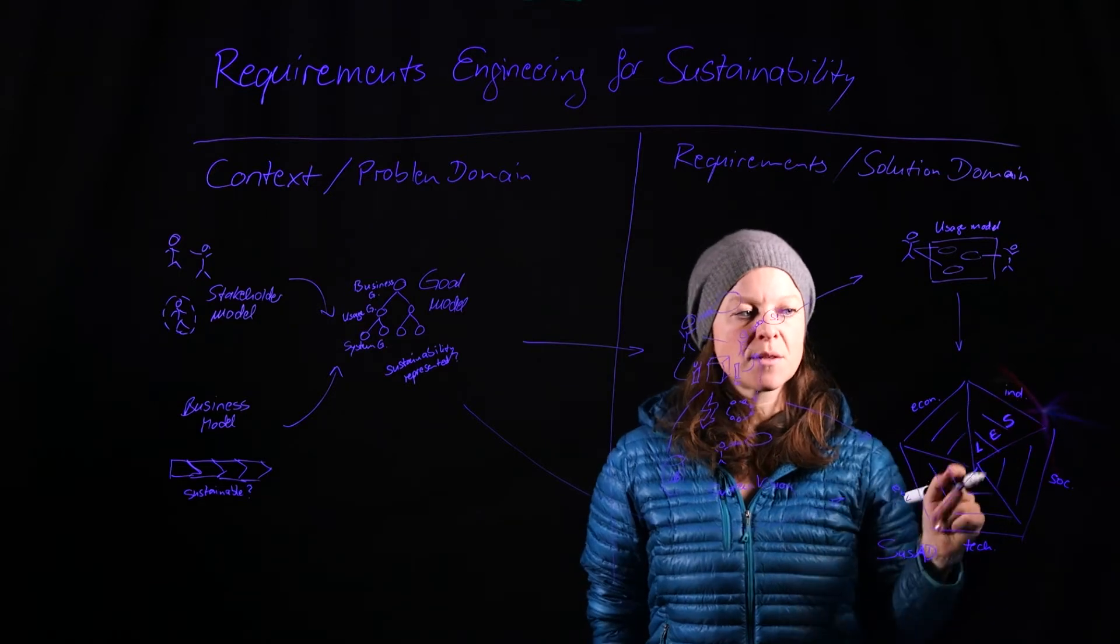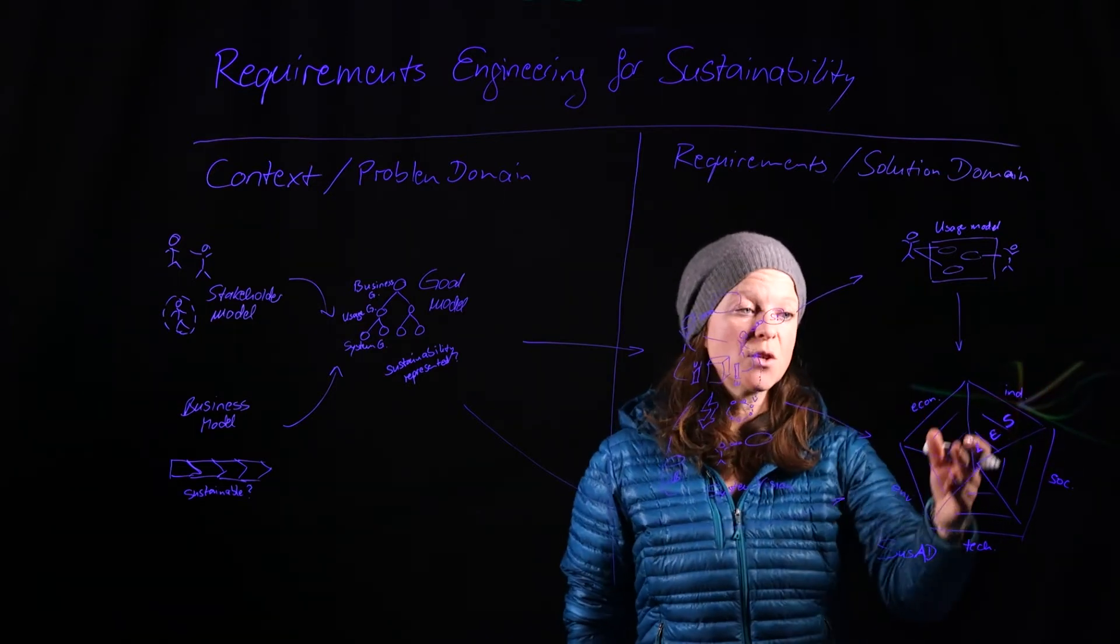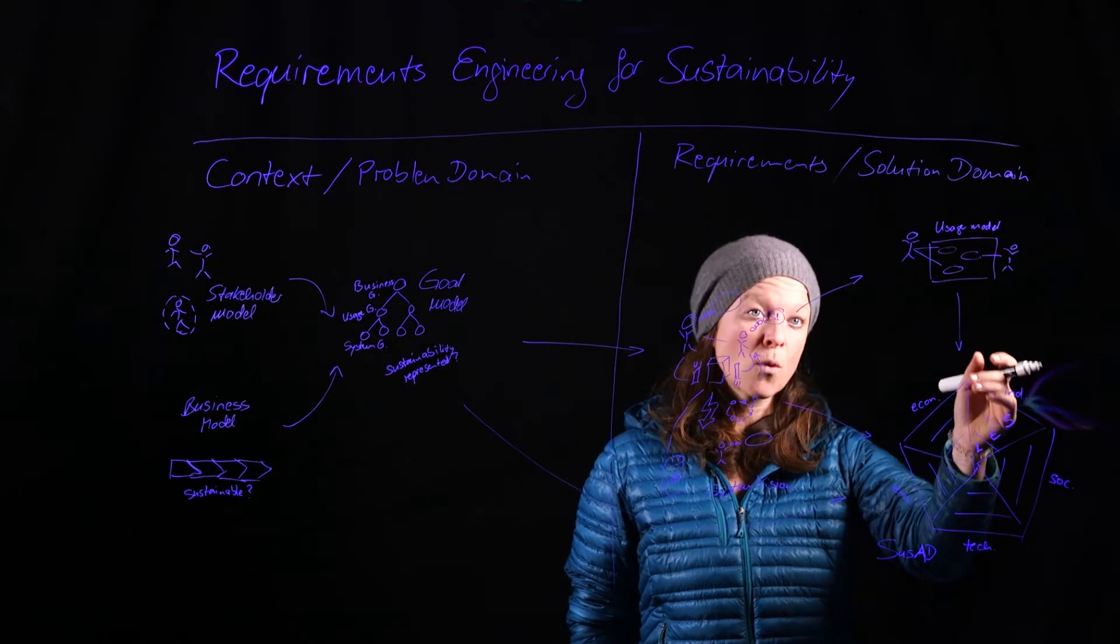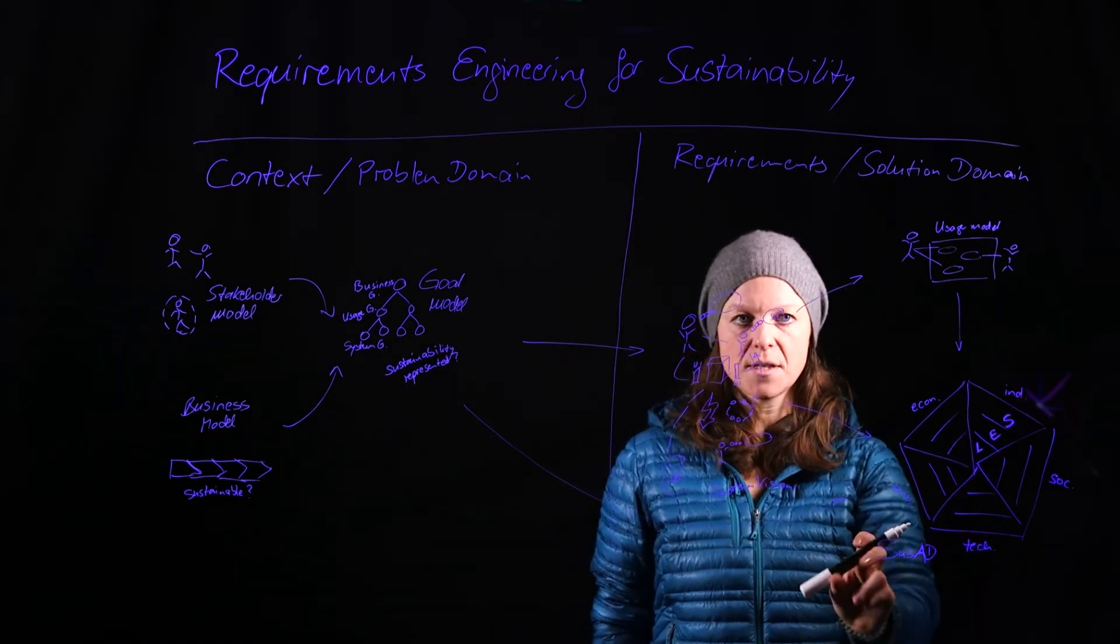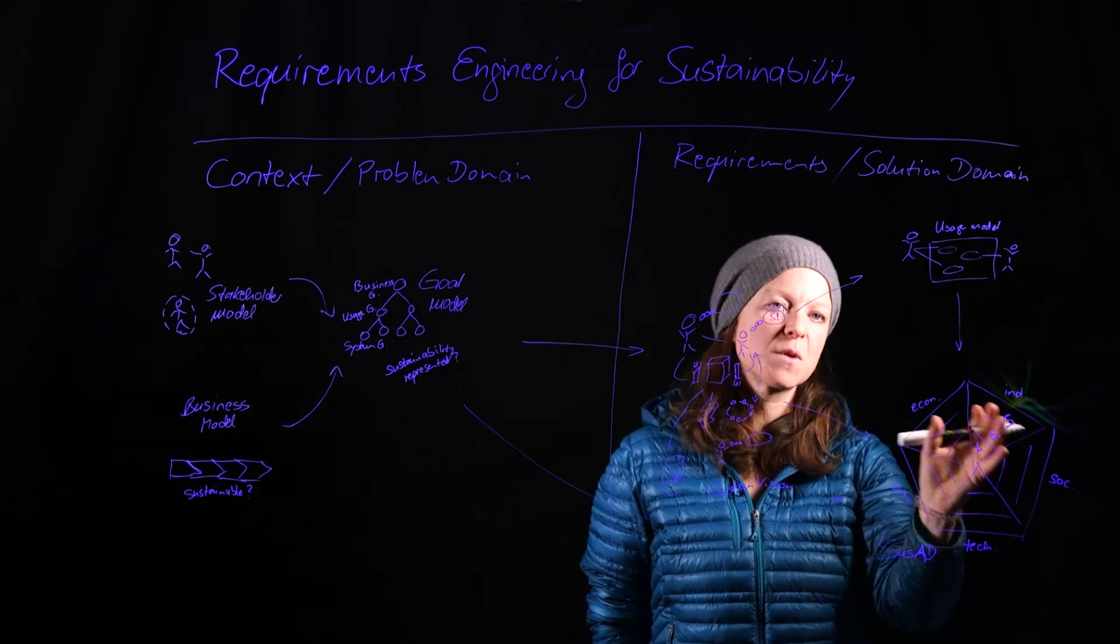So in systemic effects, we can have both, or on any of these levels, we can have positive or negative impacts. And we want to make sure that in our sustainability analysis diagram, both of those sides show up.